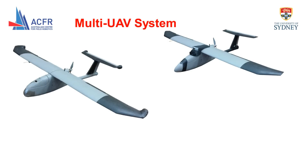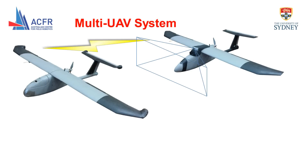After duplicating the UAVs, we add a wireless communications link, an infrared camera at the front of the follower, and infrared LED markers on the leader. Vision is used to aid the onboard sensors to achieve the high accuracy requirements that are not possible with GPS alone.